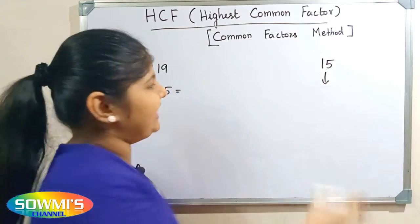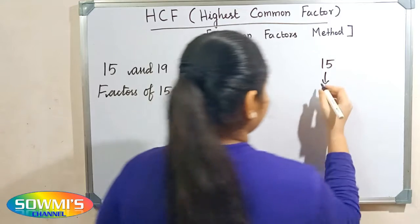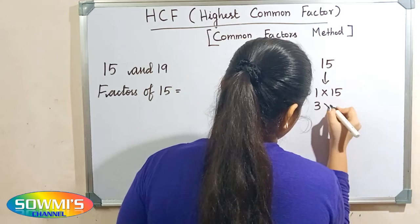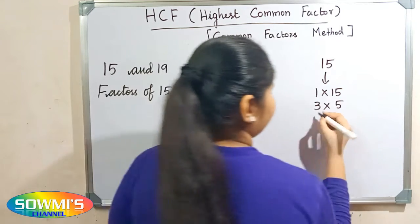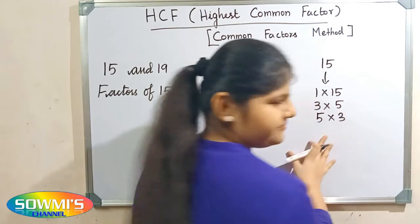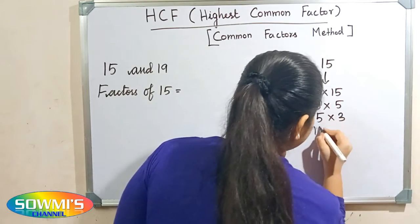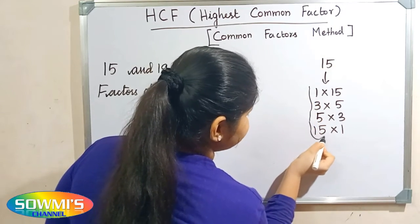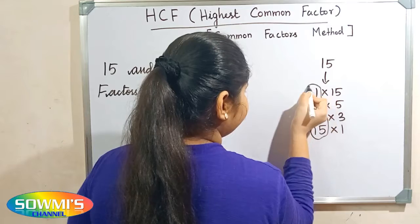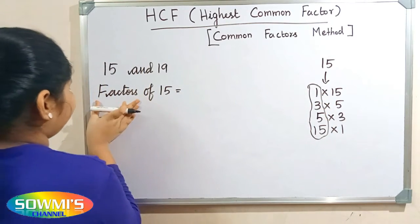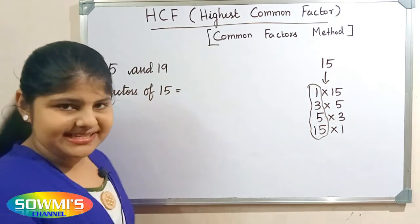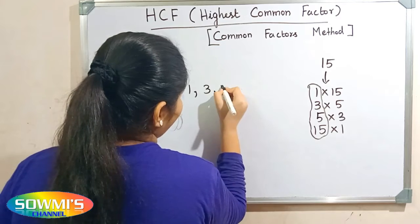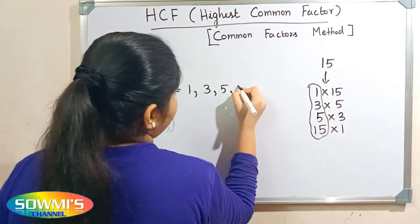We have to find in which table 15 comes: 1 × 15 = 15, 3 × 5 = 15, 5 × 3 = 15, 15 × 1 = 15. These are the factors of 15. So the factors of 15 are 1, 3, 5, and 15 itself.